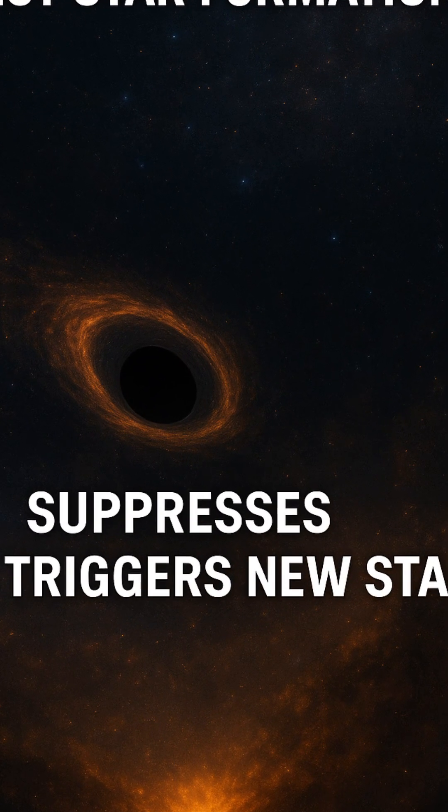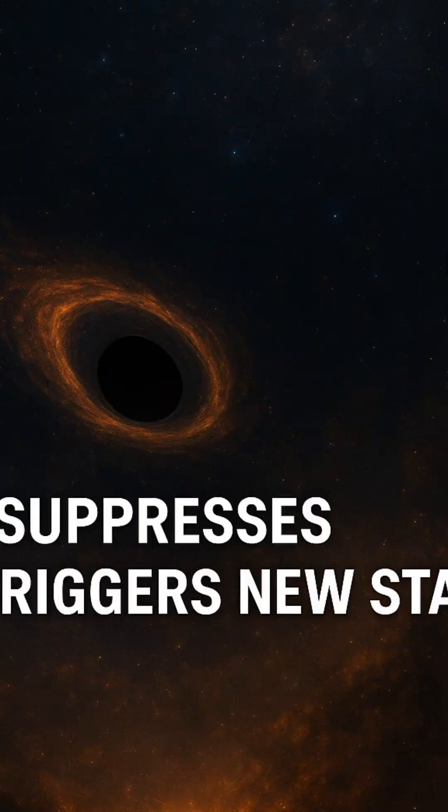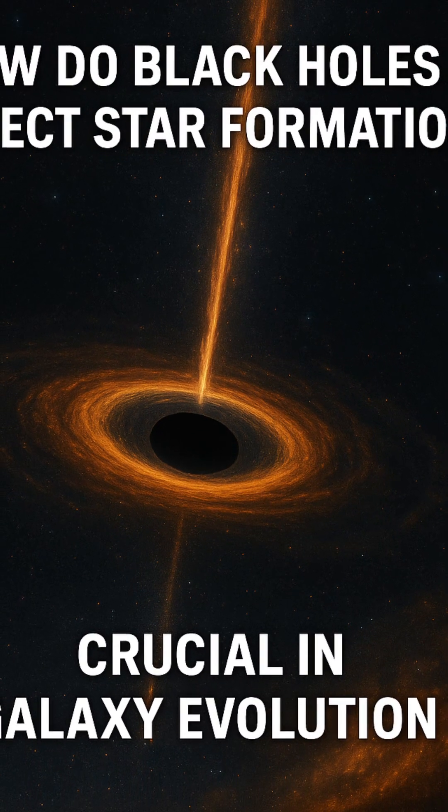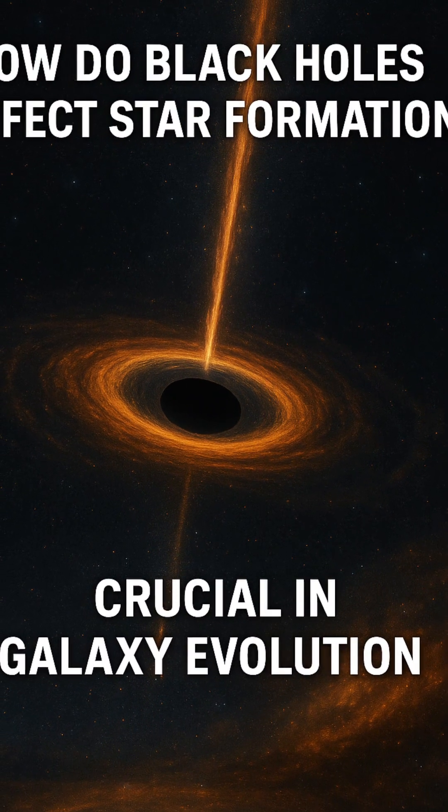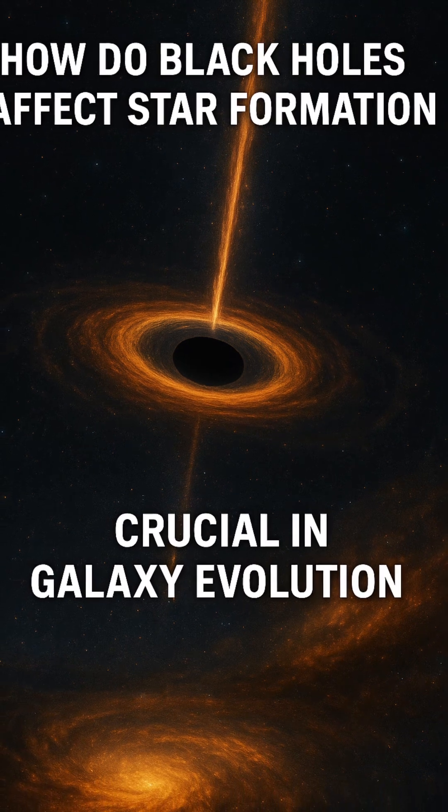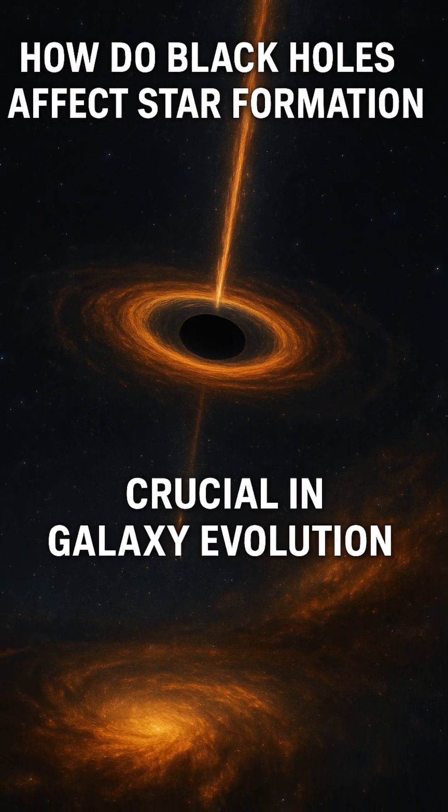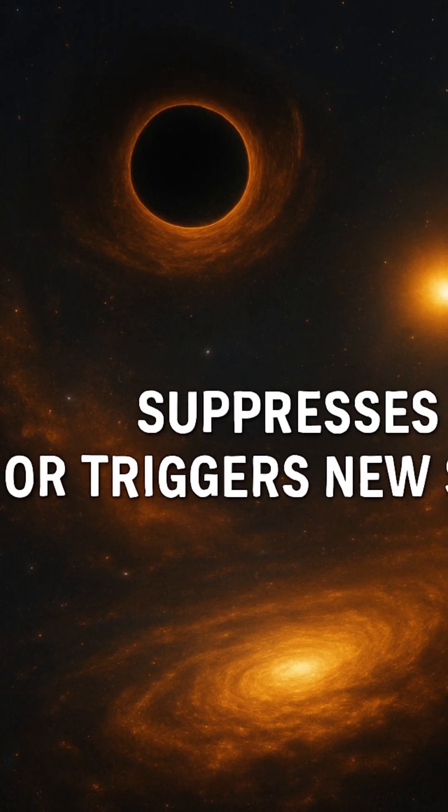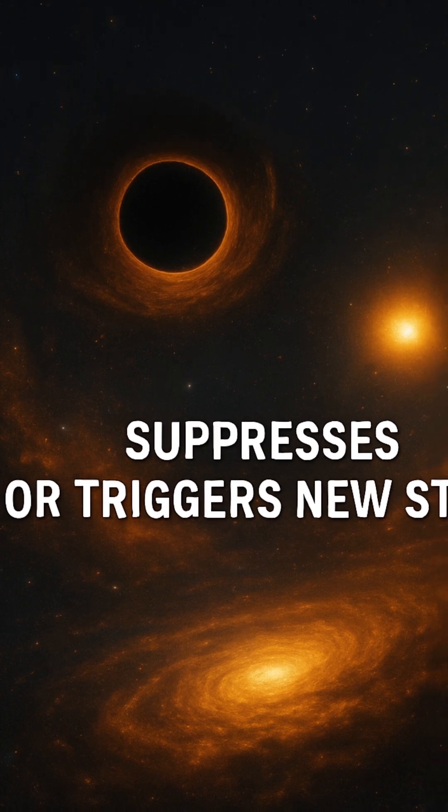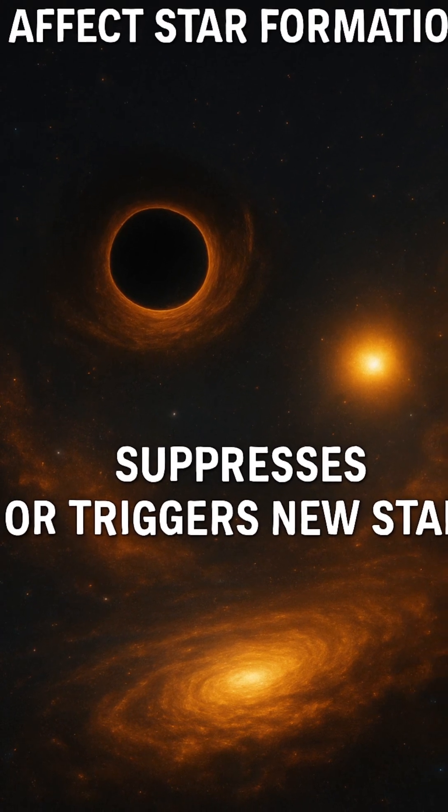Jets, narrow, high-speed beams of charged particles, can shoot out from the poles of a spinning black hole traveling for thousands of light years. These jets plow through the galaxy, heating up the surrounding gas or even ejecting it into intergalactic space. When this gas is too hot or too dispersed, it can no longer collapse under gravity to form new stars.